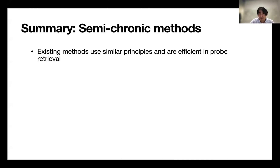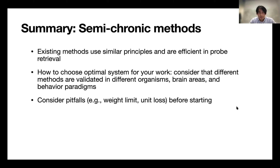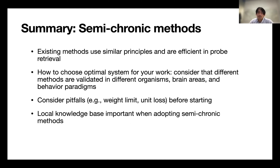In summary: five different semi-chronic methods exist, and it's a great time to get started on semi-chronic recording with Neuropixels. They all use very similar principles, with differences in how they're optimized for different uses, but all are efficient for probe retrieval. When choosing a system, consider that different methods are validated in different ways — pick the one most similar to your application. There are pitfalls to be aware of, and this is not one-size-fits-all. Local knowledge is really important: at UCL, for example, there is a community of people who have learned to use these systems, and that makes adoption much easier.